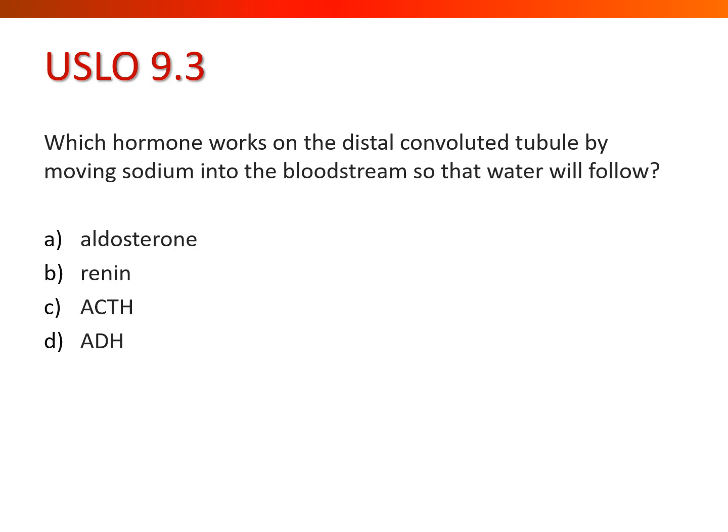Which hormone works on the distal convoluted tubule by moving sodium into the bloodstream so that water will follow? We just talked about that — it's aldosterone. Renin is technically an enzyme that plays a role in activating aldosterone and is released due to a change in blood pressure. ACTH comes from the anterior pituitary and works on the adrenal cortex — it stands for Adrenal Corticotropic Hormone. ADH, according to the textbook, works on the collecting duct.